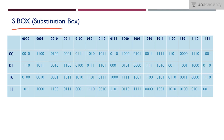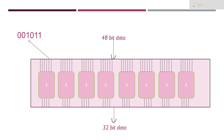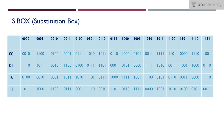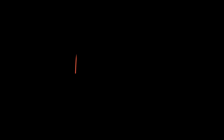So in this S-box, the first bit and the last bit will give my row. So the first bit 0 and the last bit 1 — that is 0,1 — will be my row. And the middle four bits 0,1,0,1 will be my column value.